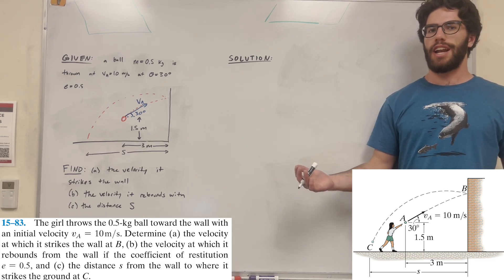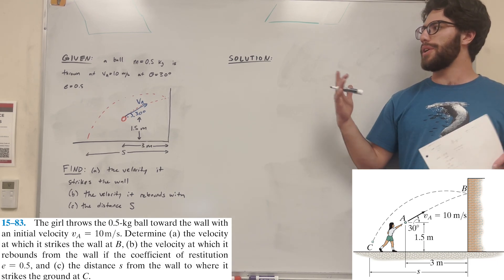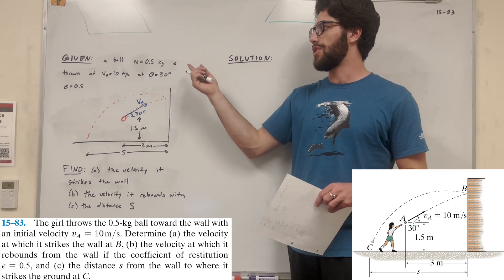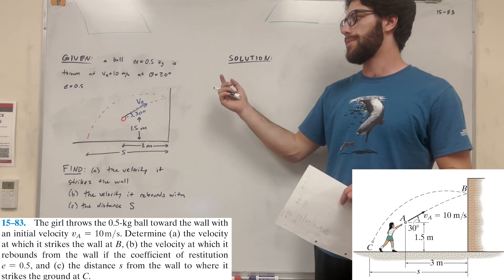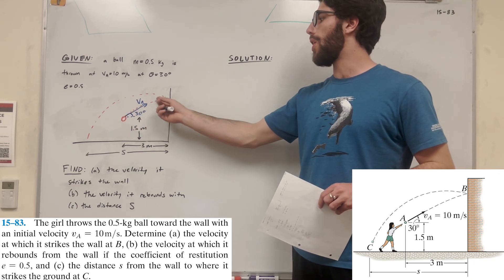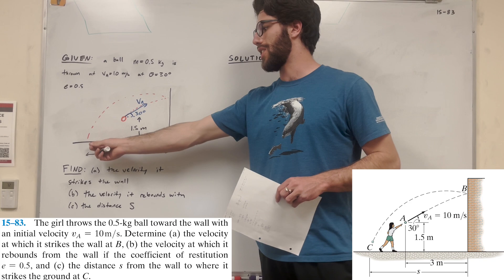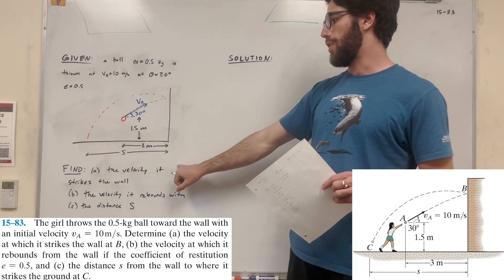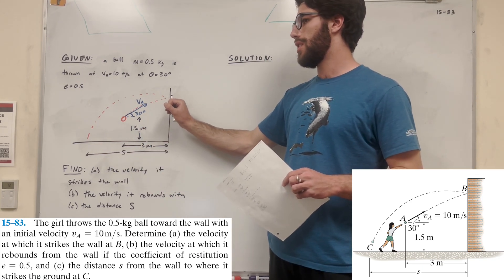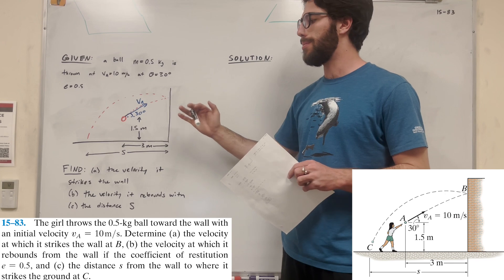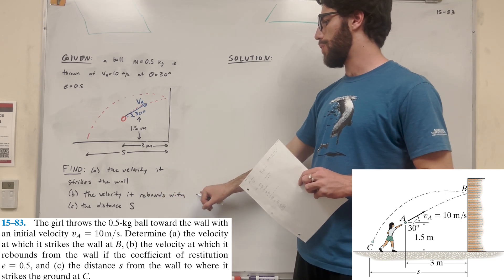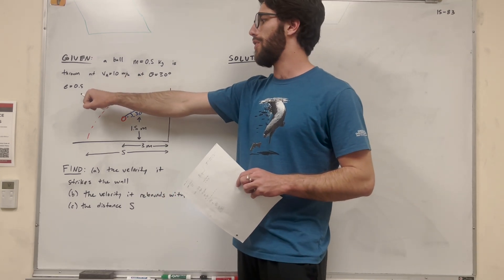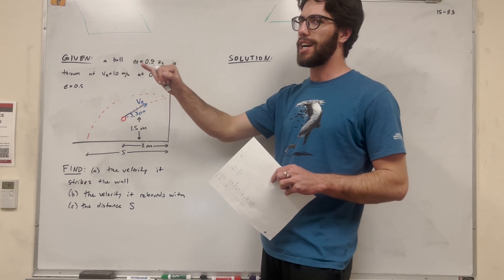What's up, Kyle Gang? Welcome back to Dynamics. So let's go ahead and solve this problem — it's kind of a long one. We have a ball with a mass of 0.5 kilograms, and we're throwing it at a wall, and it's going to bounce off the wall and travel this distance S. Our goal is to find the velocity at which it strikes the wall — a kinematics problem — the velocity at which it rebounds, and we're given the coefficient of restitution for that, so that's an impact problem.